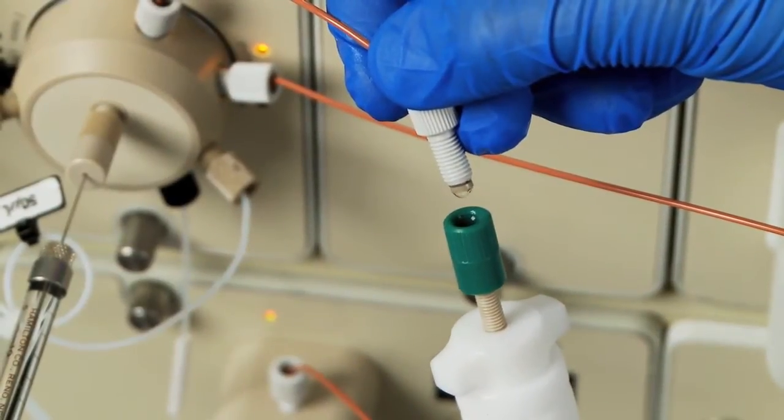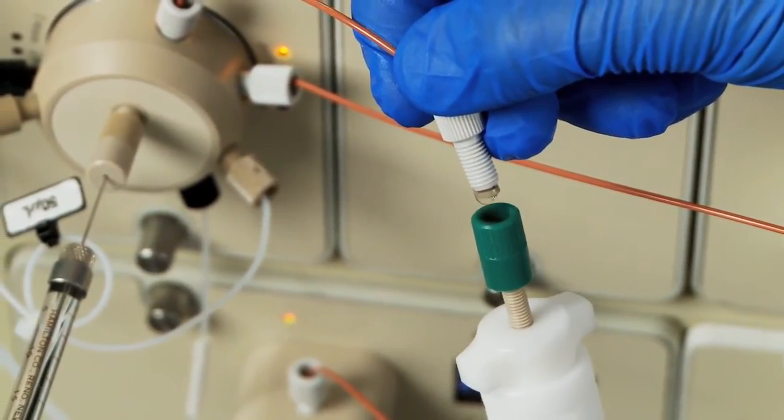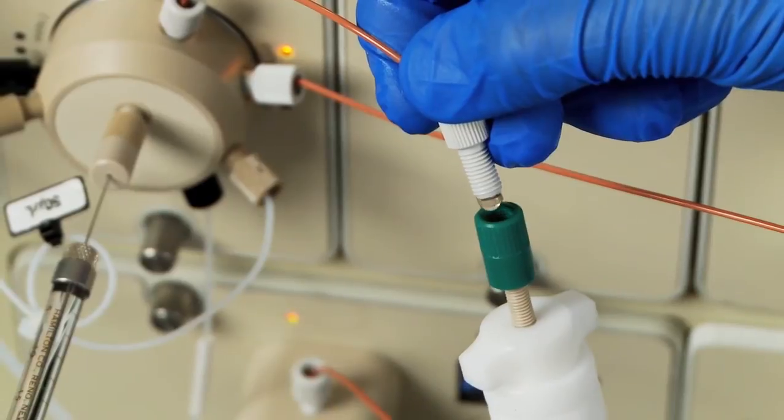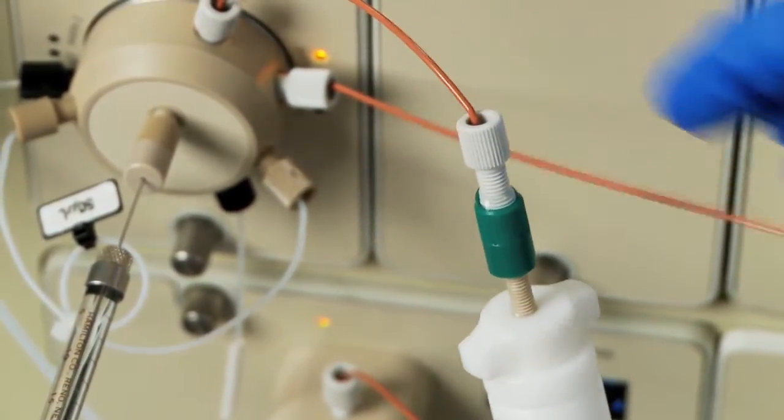Position the sample injection valve outlet line above the column inlet port. Then, slowly flow buffer from the sample injection valve outlet line into the open inlet port, which is not attached to any tubing.